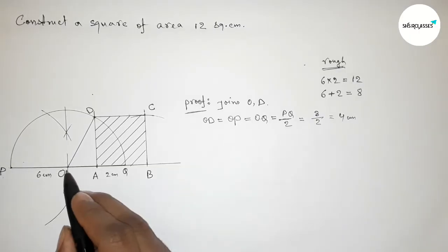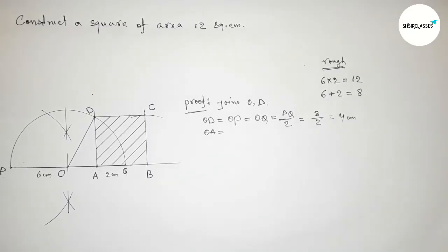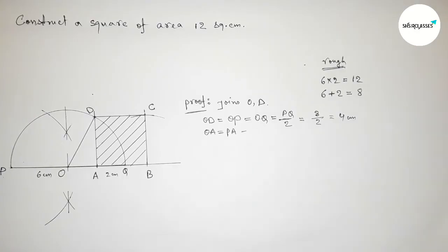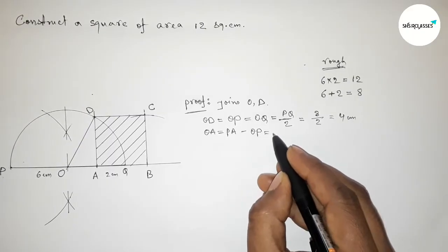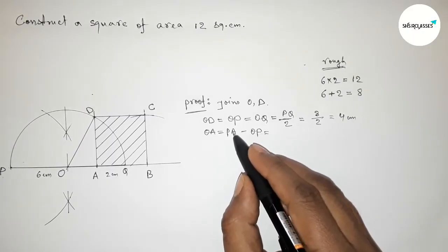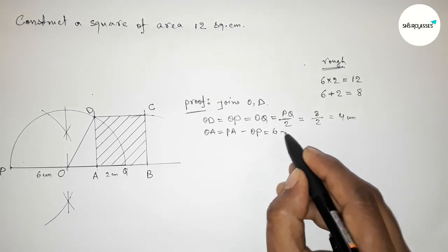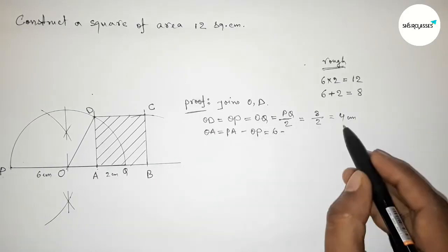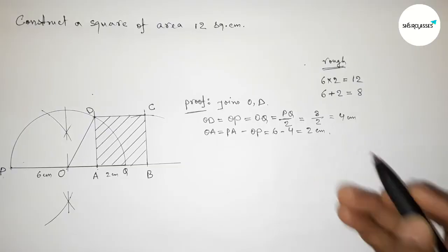Next, finding the length OA. OA equals PA minus OP. Putting in the values: PA is six, OP is four, so six minus four equals two. Therefore OA equals two centimeters.